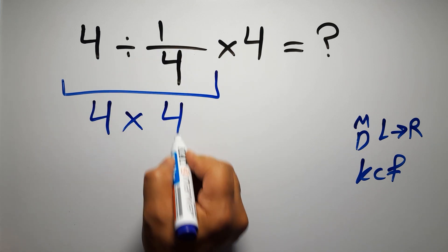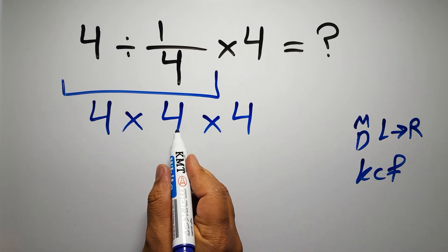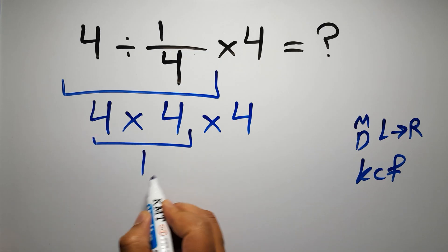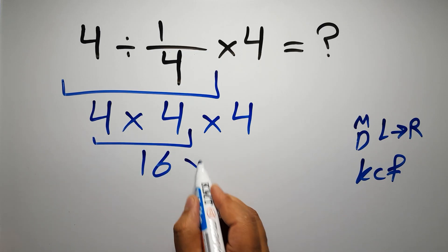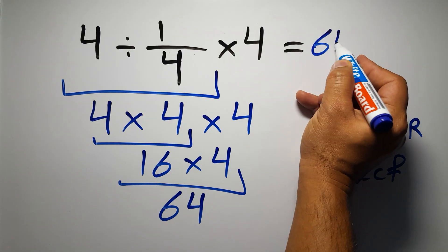Then times 4. So 4 times 4 times 4. 4 times 4 gives us 16, and 16 times 4 is 64. And this is our final answer to this problem. The correct answer is 64.